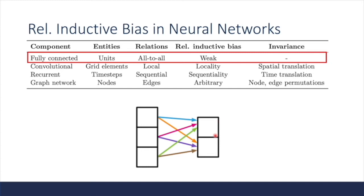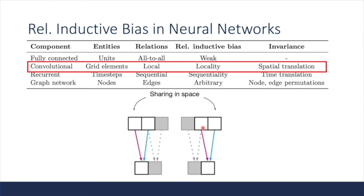In fully connected layers, each unit in the input and output vectors are connected by independent weights. All input units can interact to determine any output unit's value independently across outputs, so fully connected layers have weak relational inductive bias. In convolutional layers, the entities are grid elements in a feature map or pixels. They have important relational inductive biases that ensure locality and translation invariance — filters are applied to a local region, so only nearby entities are used together, and weights are shared across spatial regions. This is really useful for processing images because local image patches are highly correlated and statistics are mostly stationary across an image.